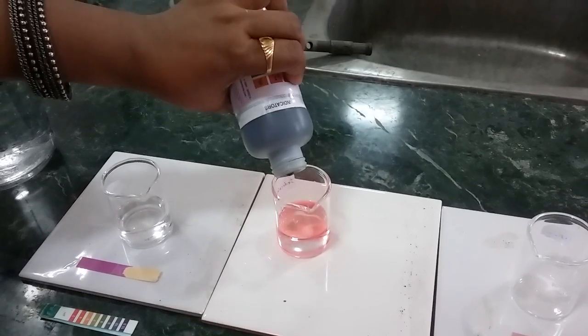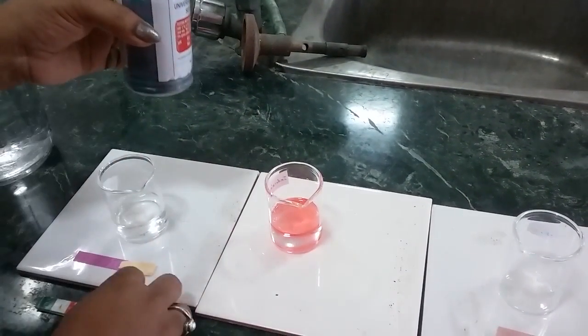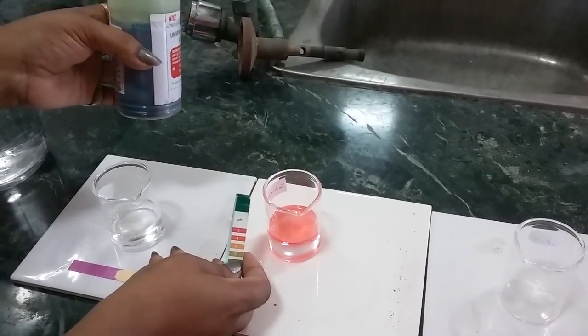The sulfuric acid solution turns into red. This also proves that it's a strong acid.